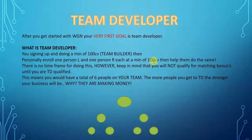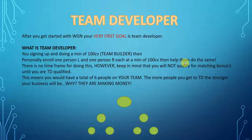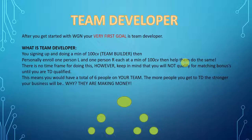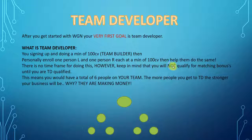That means right now the Hilo Partner Pack for $320 — if you live in one of the countries where you can get the Digital Light Package, that would qualify you as well. Then you just help those two people do the same. Two who get two is all you ever have to do. So if you get your two and help them each get their two, you're going to be team developer.